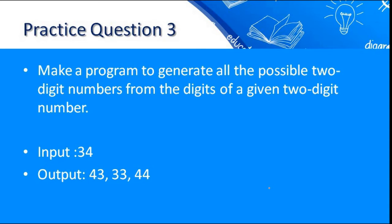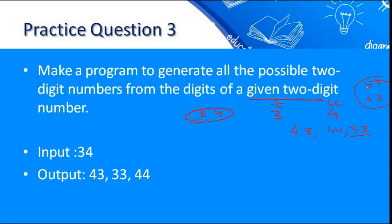Our third practice problem is to make a program to generate all possible two-digit numbers from the digits of a given two-digit number. For example, if the given number is 34, it has digits 3 and 4 — units digit is 4 and tens digit is 3. We have to make all combinations: 43, 44, and 33. We must make only two-digit numbers, so 03 and 04 are not allowed.